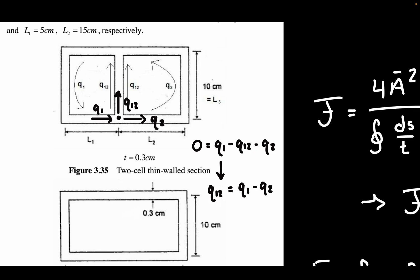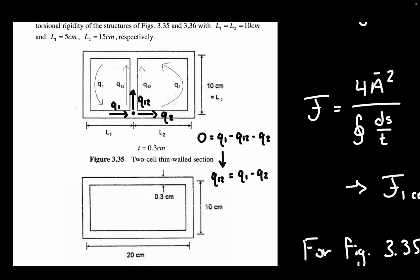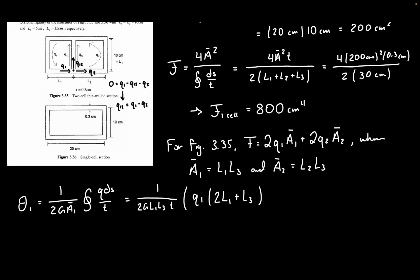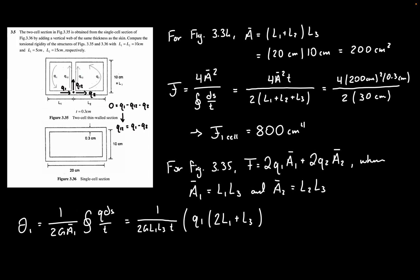Using Q1,2, we add plus Q1,2 times L3 to the twist rate expression for the first section. Substituting Q1,2 equals Q1 minus Q2, this term becomes Q1 minus Q2 times L3, completing the first twist rate equation.